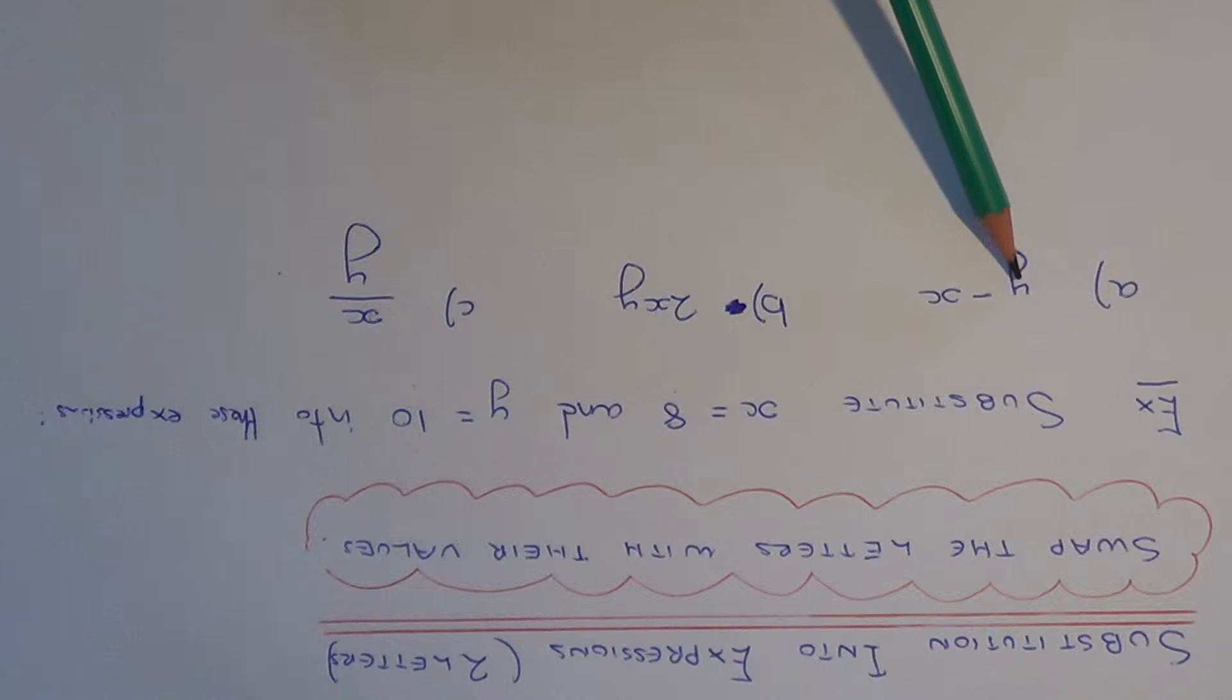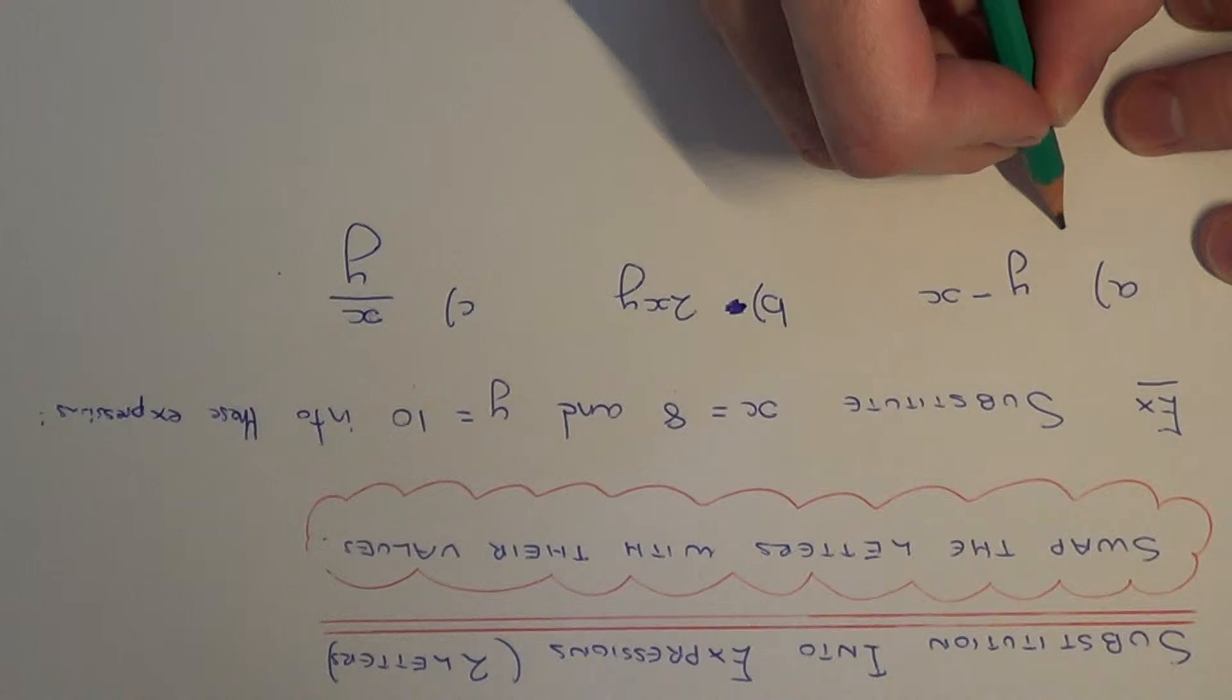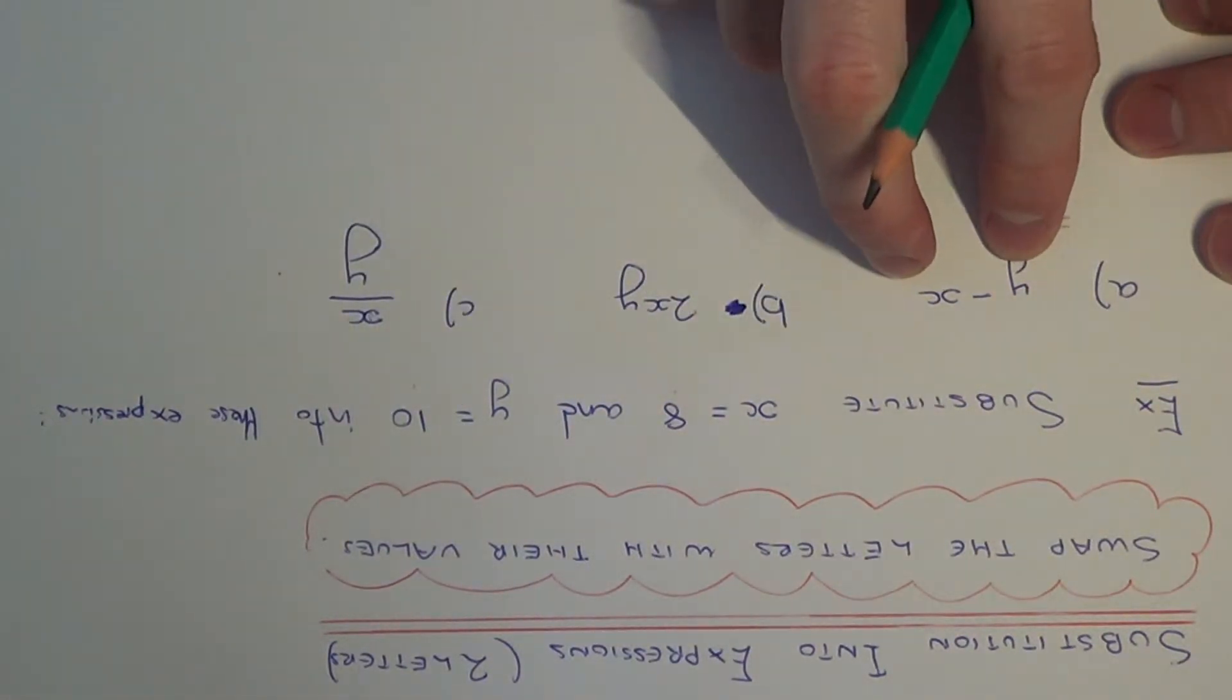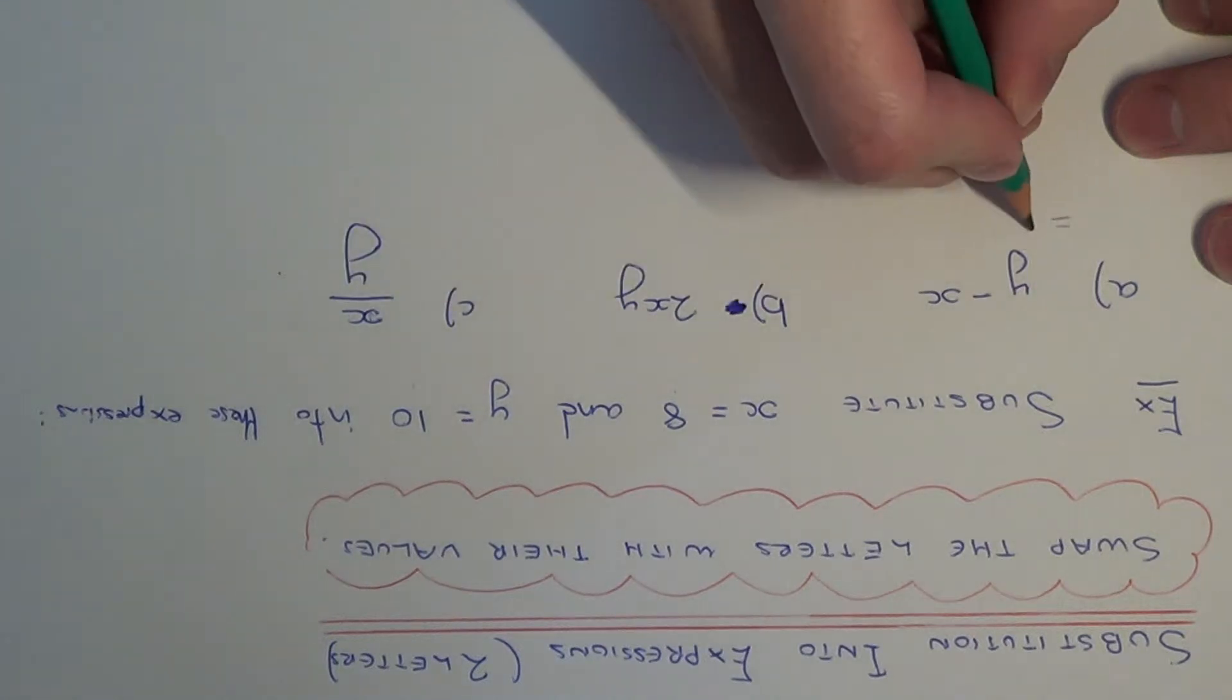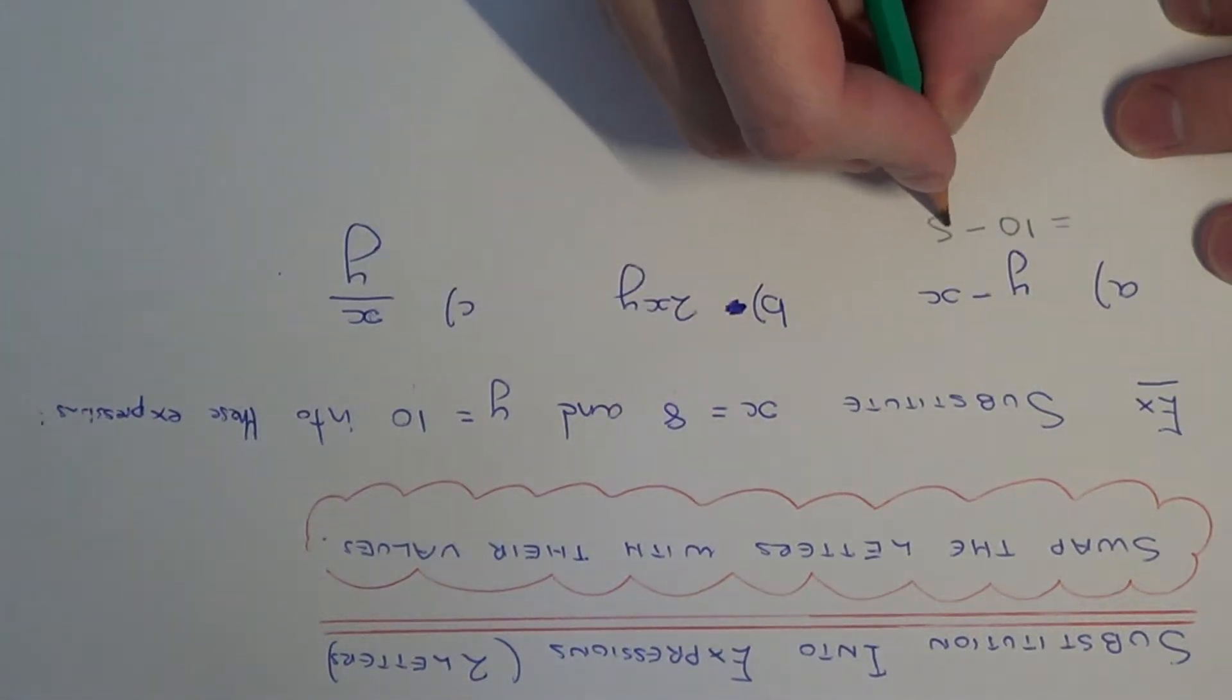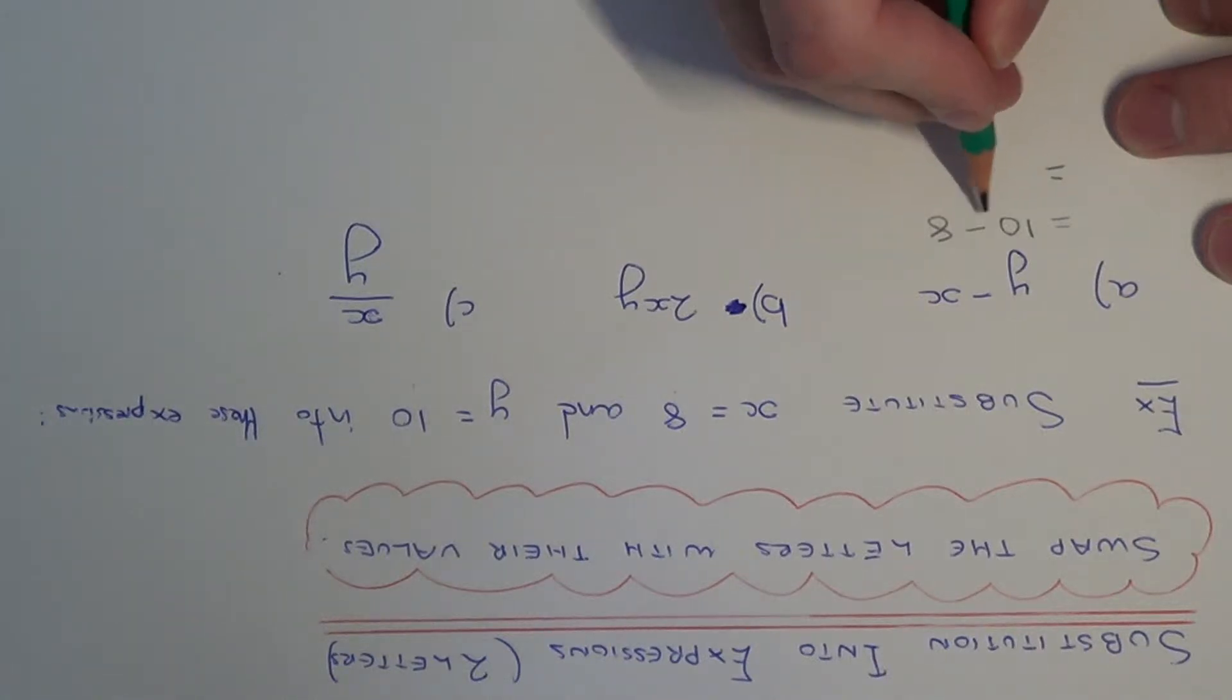Part a we've got y take away x. On your next line down, just substitute the two numbers for the letters. So y is 10 and x is 8. So 10 take away 8 is 2.